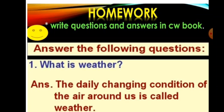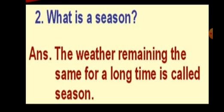Children, now it is time to give you homework. You have to write all these questions and answers in your classwork book. Number one: What is weather? Answer: The daily changing condition of the air around us is called weather. Next, question number two: What is a season?